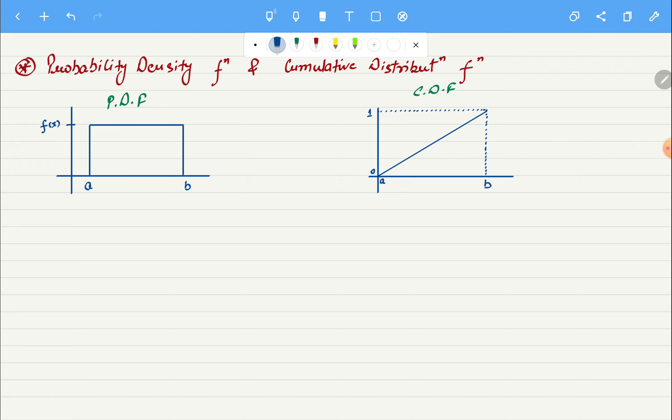To explain you PDF and CDF, I have taken a random variable which is uniformly distributed and it is ranging from a to b. Now let's say we want to know if we randomly pick a value between a and b, what will be its probability to be less than x?